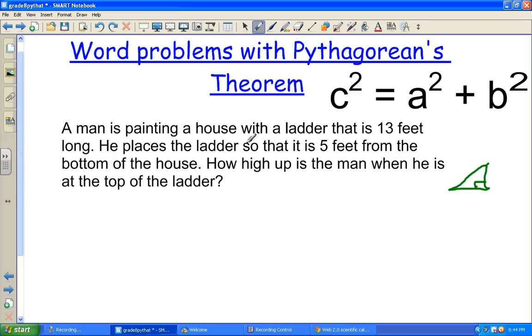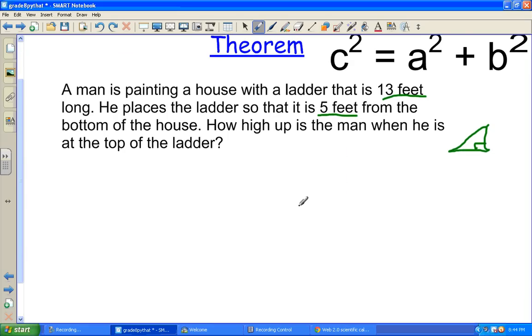So let's look at the information we're given first. It says a man's painting a house with a ladder that is 13 feet long. He places the ladder so that it is 5 feet from the bottom of the house. How high up is the man when he's at the top of the ladder?